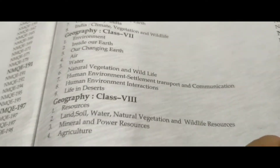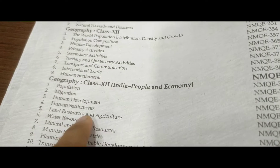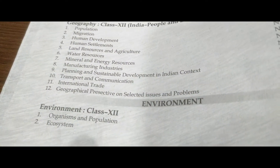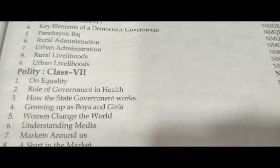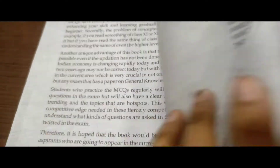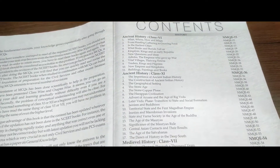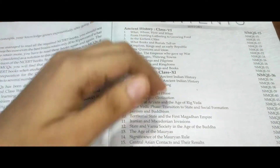Geography MCQs from class 6 to 12 are provided in this book. In environment, only class 12 NCERT MCQs are given, as this is the most important for UPSC. Further, in the polity section, class 6 to 12 MCQs are provided. Economics covers class 9 to 12, and science covers class 6 to class 10 MCQs. All subjects are organized by class 6 to 12, except history, which is arranged as ancient, medieval, modern, and world history.